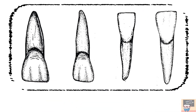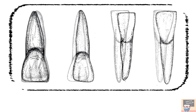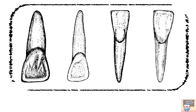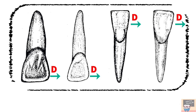Now how do we identify the quadrant? Turn the tooth so that the lingual side faces you. The direction of the distal side indicates the quadrant. For example, if the distal side of a tooth is towards your right, then the tooth belongs to the right quadrant. And if the distal side is towards your left, then the tooth belongs to the left quadrant.